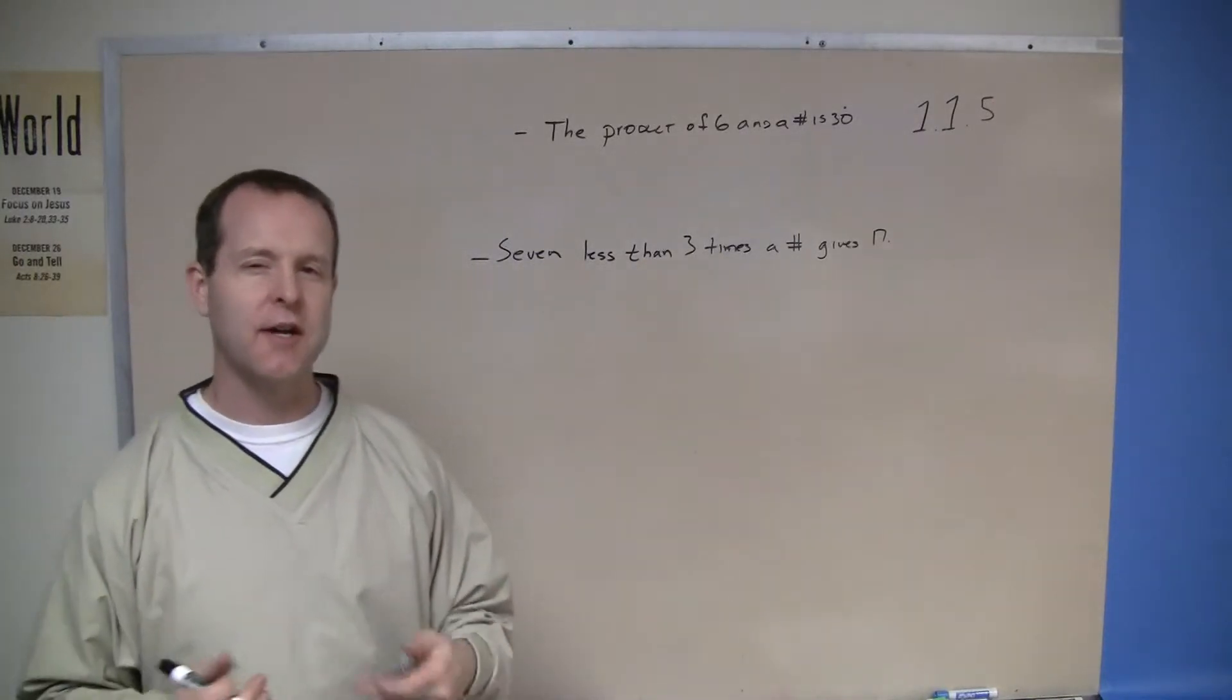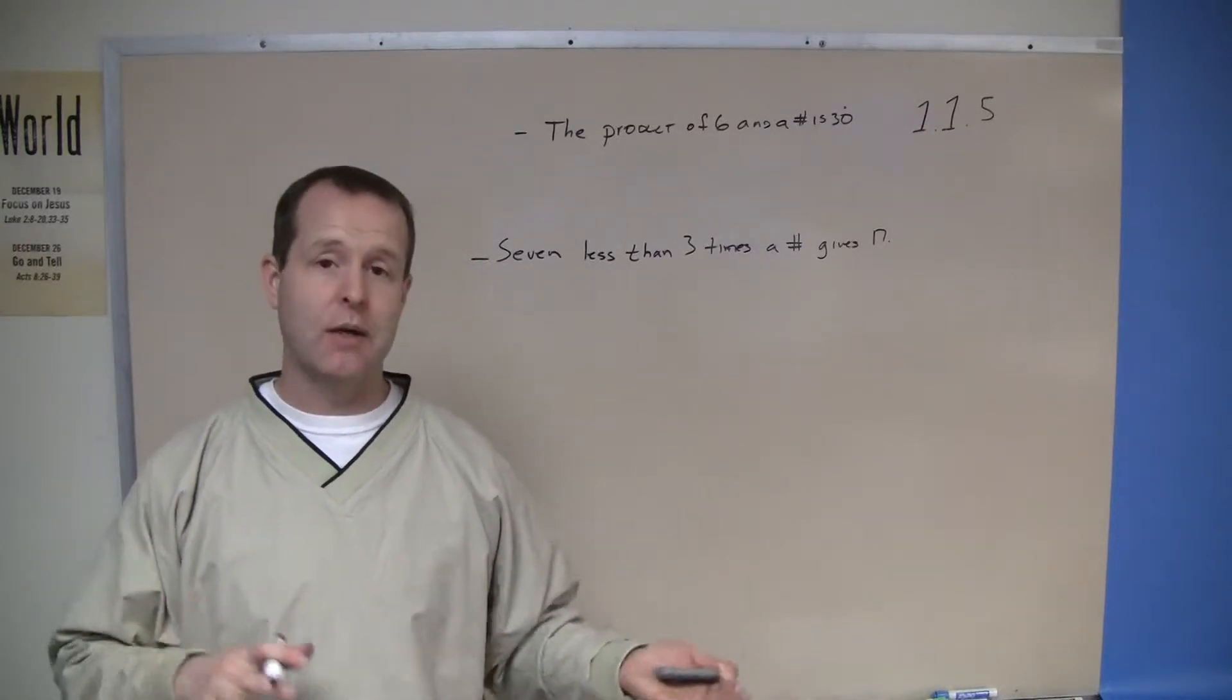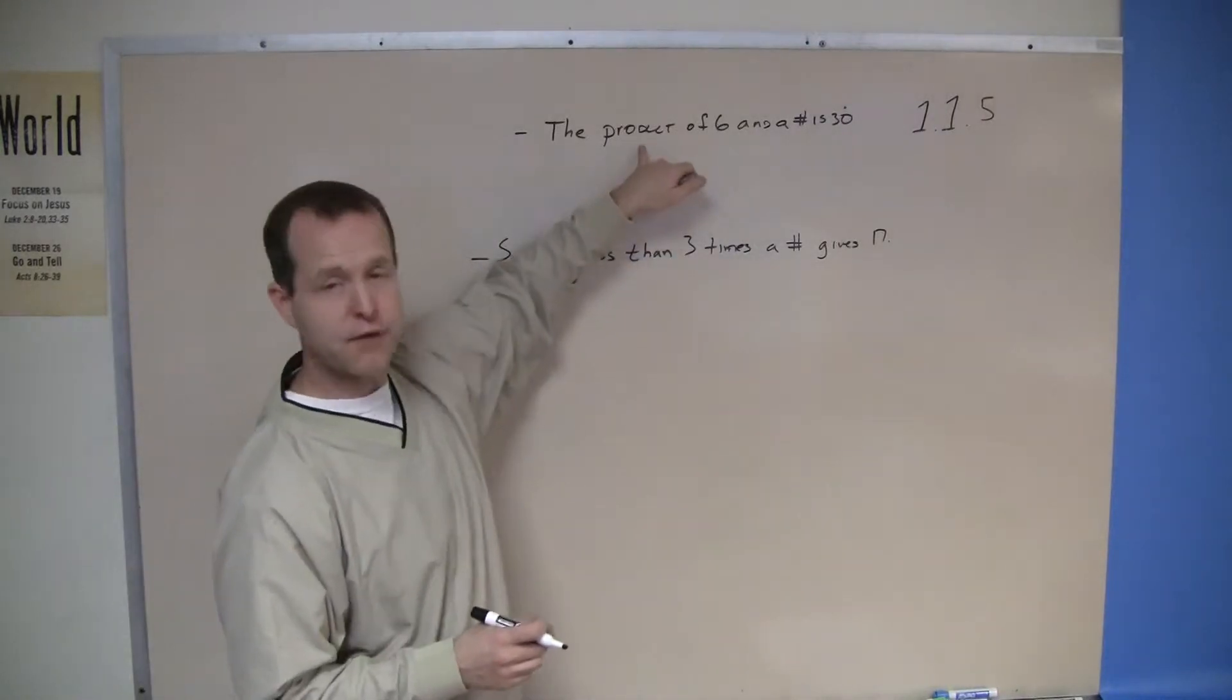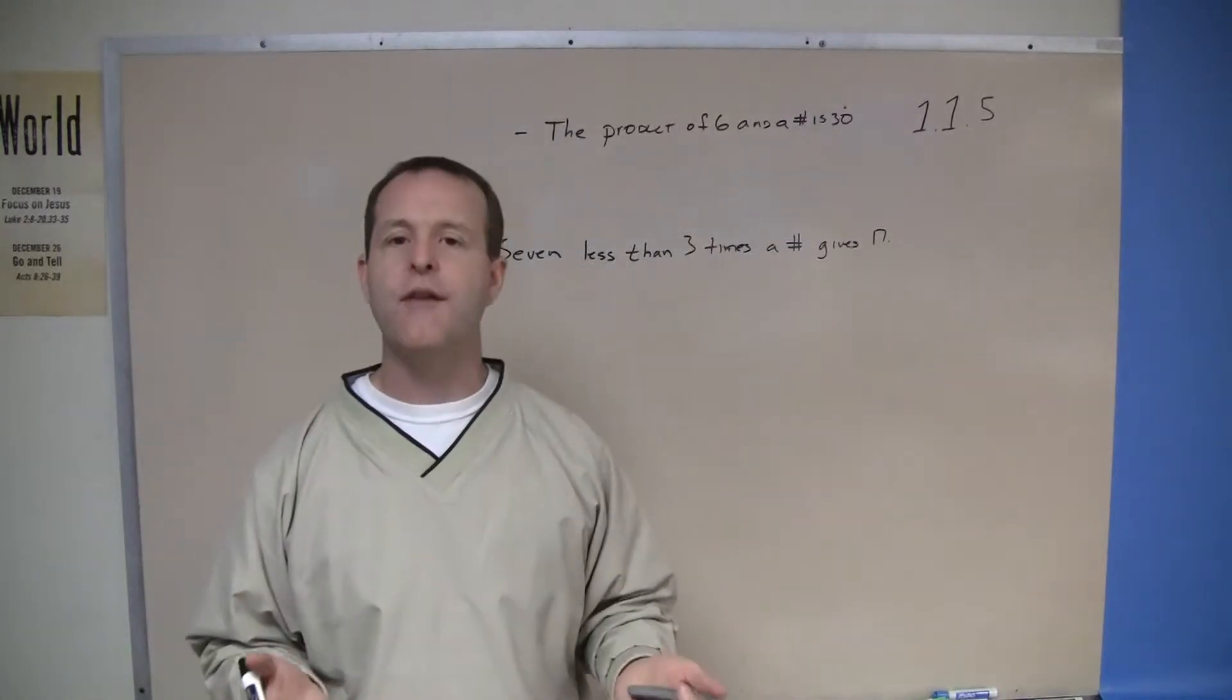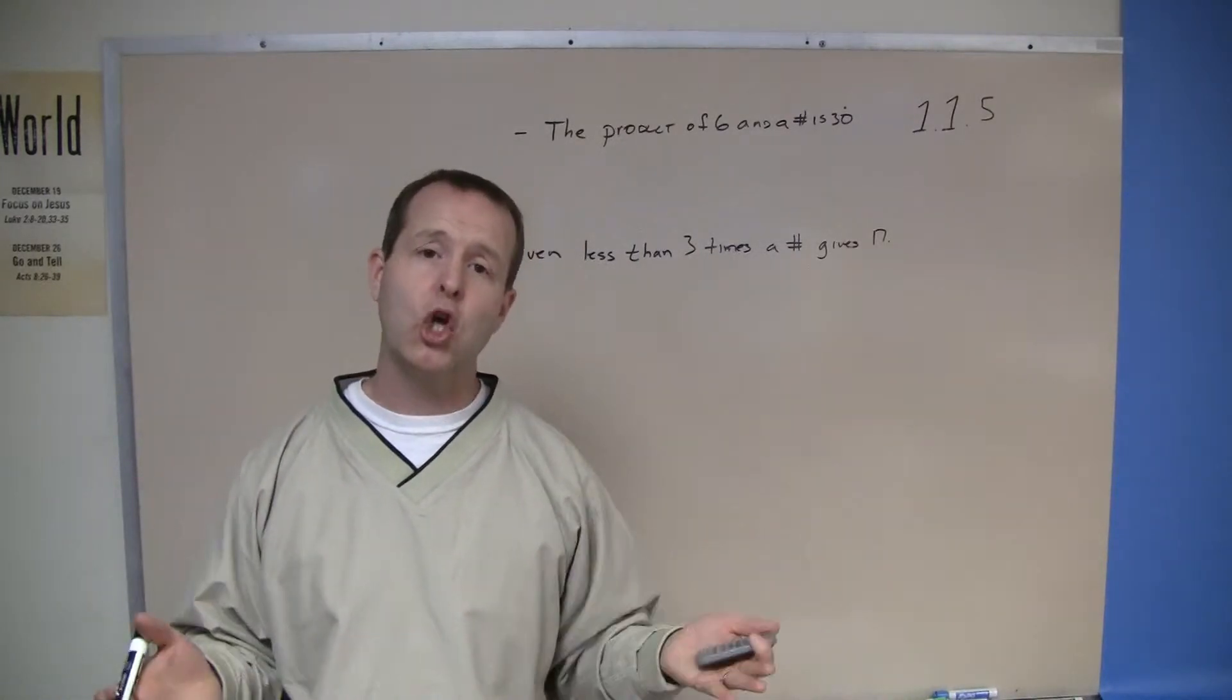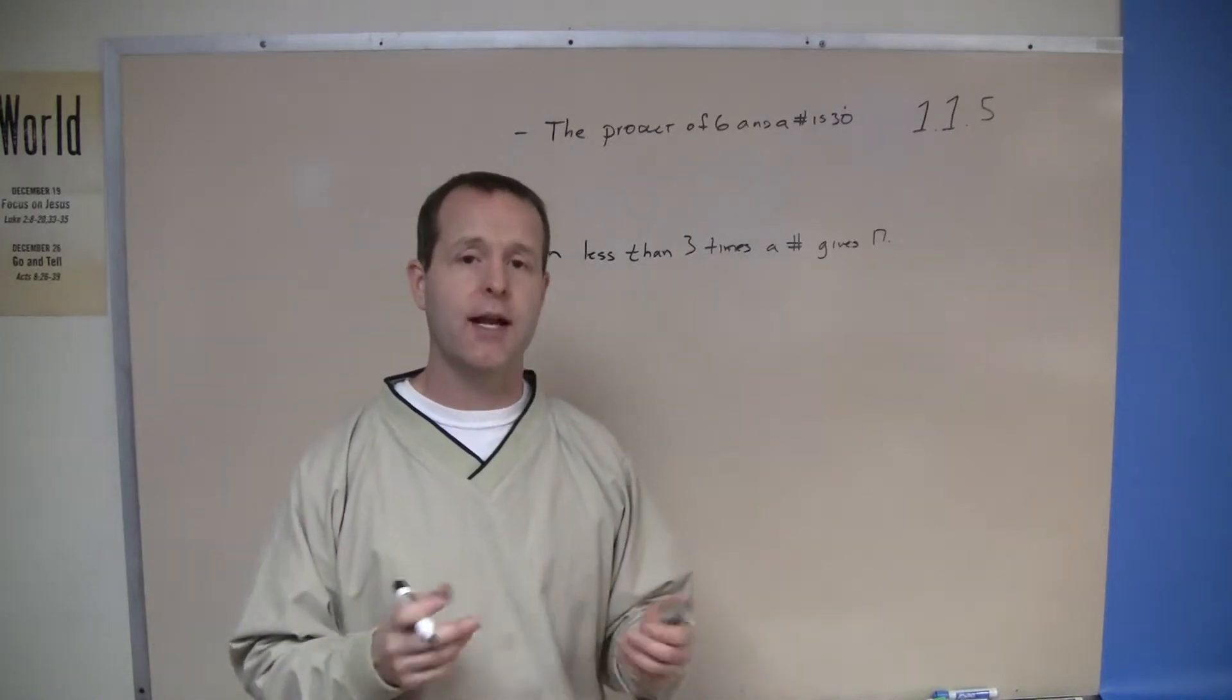You can already see that I'm starting to take some shortcuts when I'm writing these English phrases down, just because I don't like to write, I rather type, and I like to look for shortcuts where I can find them. Notice that in this first phrase, the product of 6 and a number, I use that little sign right there as an abbreviation for a number. That's what translating to an algebraic expression really means—we're looking how to rewrite these using some shortcuts that can help us understand what's being said.